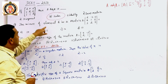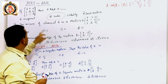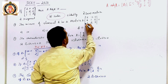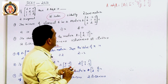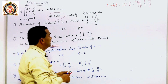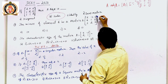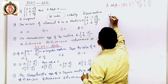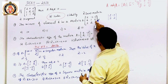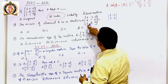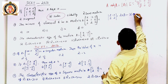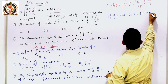The second question: find the minor of element 6 in matrix A. For a minor, we don't worry about the plus or minus sign — we only take the remaining elements. So leaving the row and column of element 6, the remaining elements form a 2×2 determinant: [2, -3; 3, 2]. The determinant is 2×2 minus 3×(−3) = 4 + 9 = 13.